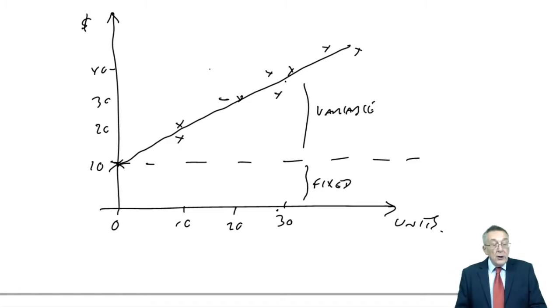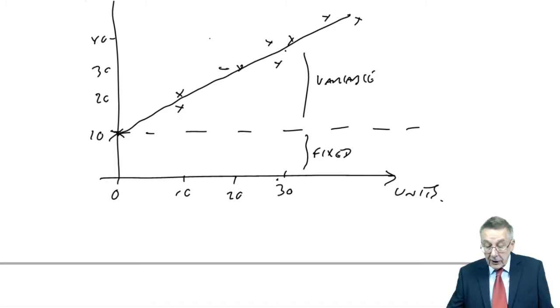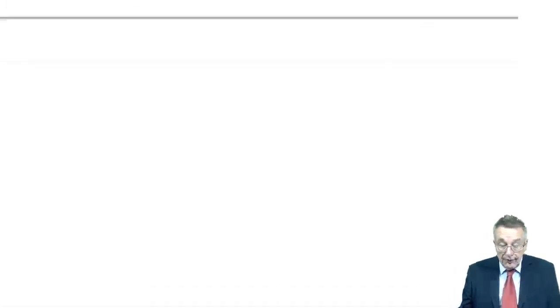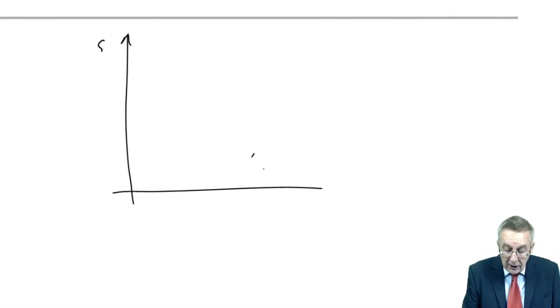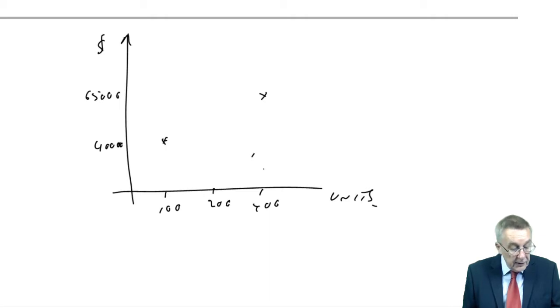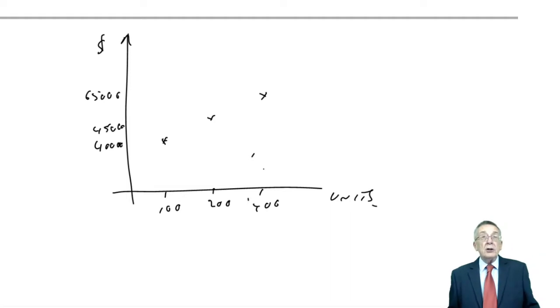But also, although I'm not going to put them all on a graph, I think you know what I mean. I could. We could have the cost as against units. I would say month one, it was 100 units, and the cost was 40,000. Month two, 400 units, and the cost was 65,000. Month three, 200 units, and the cost was 45,000. We could put them all on a graph.